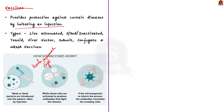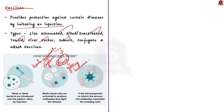Sometimes after getting a vaccine, the imitation of the infection can cause minor symptoms like fever — this is normal and is a sign that our body is building immunity. There are several types of vaccines: live attenuated vaccines, killed or inactivated vaccines, toxoid vaccines, viral vector vaccines, subunit vaccines, conjugate vaccines, mRNA vaccines, and so on. Let us restrict our discussion to live attenuated vaccines, killed or inactivated vaccines, viral vector vaccines, and mRNA vaccines.